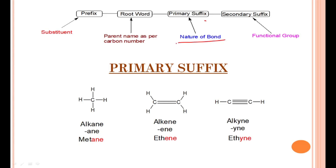Coming to the primary suffix — the nature of the bond: if all carbon atoms are singly bonded, the compound is an alkane, and we give the primary suffix '-ane'. If at least one double bond is present, it is an alkene and the primary suffix is '-ene'. If at least one triple bond is present, it is an alkyne and the primary suffix is '-yne'. Remember: even if just one double bond is present, the whole molecule is considered an alkene.